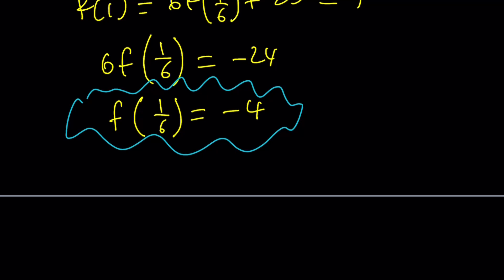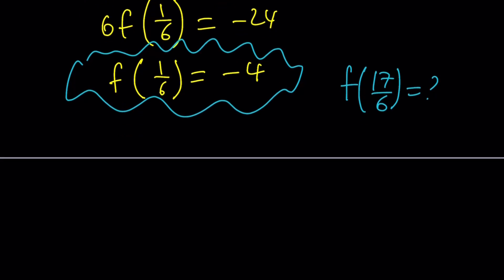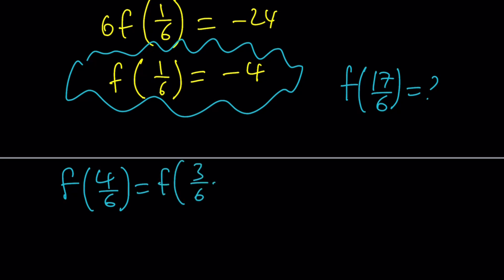This is great because we can now build our way up to f of negative 17 over 6. First, let's evaluate f of 17 over 6, because going from that to negative 17 over 6 will be easy. Half of 17 is about 8, so I need to get to 8, and to get to 8 I need f of 4 over 6.